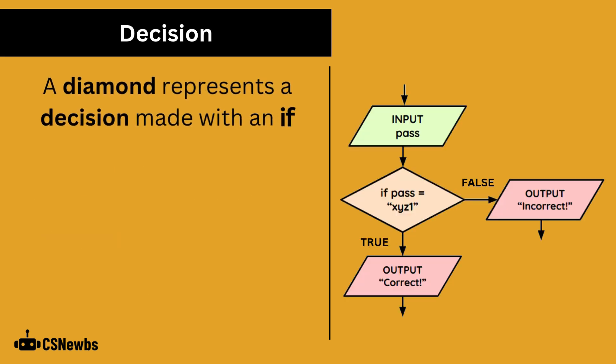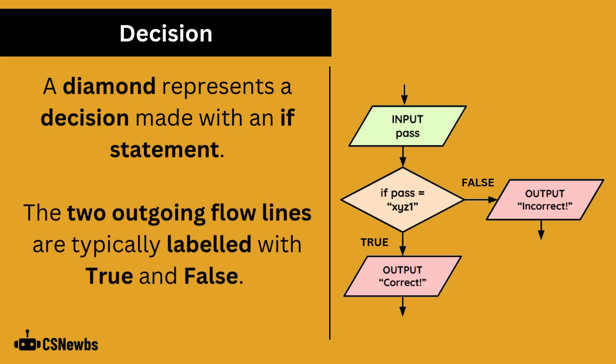A diamond represents a decision made with an if statement. The two outgoing flowlines are typically labeled with true and false.